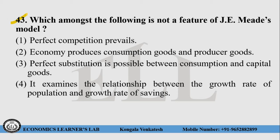Question number 43: Which among the following is not a feature of J.E. Meade's model? Choice 1 — perfect competition: yes, this is correct. Choice 2 — economy produces consumption goods and producer goods: yes, this is also correct. Choice 3 — perfect substitution is possible between consumption and capital goods: yes, this is also correct. Choice 4 — it examines the relationship between the growth rate of population and growth rate of savings: this is not correct. So the right answer for this question is choice number 4.